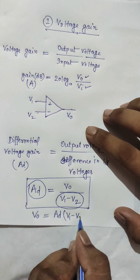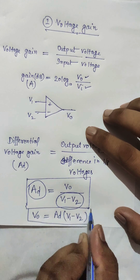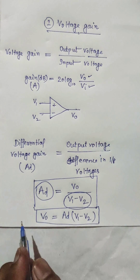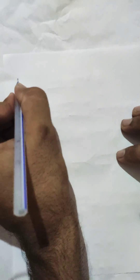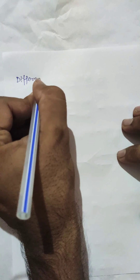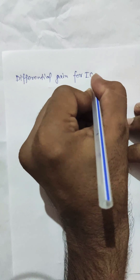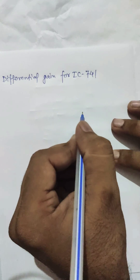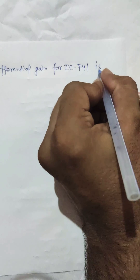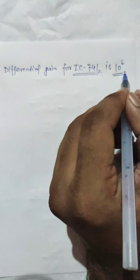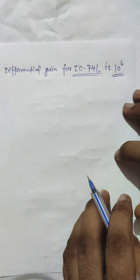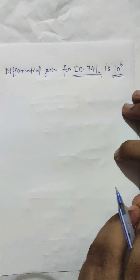The differential gain for IC741 is 10 to the power 6. This is an important number: for a practical IC741, the differential gain is 10 to the power 6, which is quite a high number. So the gain of an operational amplifier is very high.